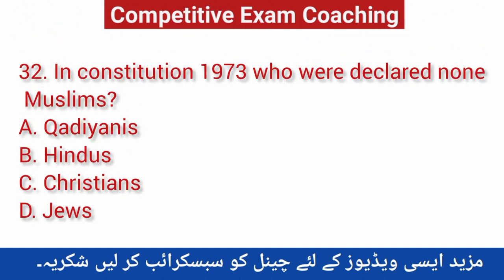Question number thirty-two: In the constitution of 1973, who were declared non-Muslims? Correct answer — Qadyanis.